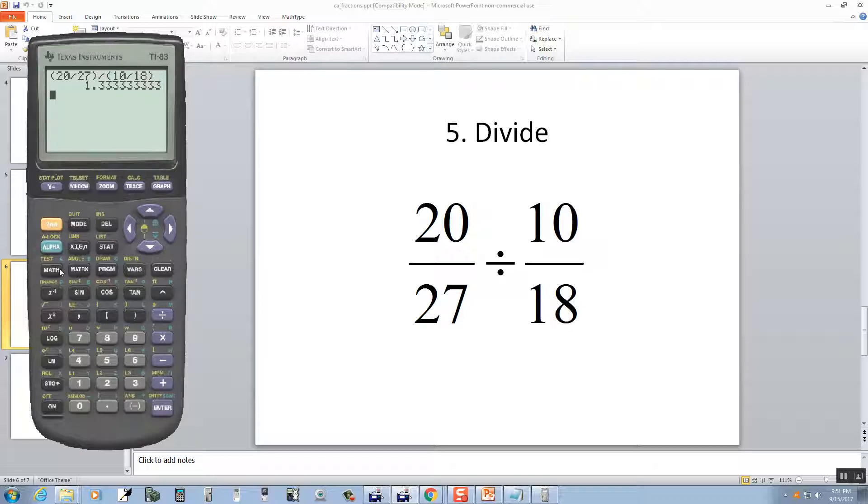And yet again, we get a decimal, so we'll do Math, Enter, Enter. And that gives us 4 thirds.